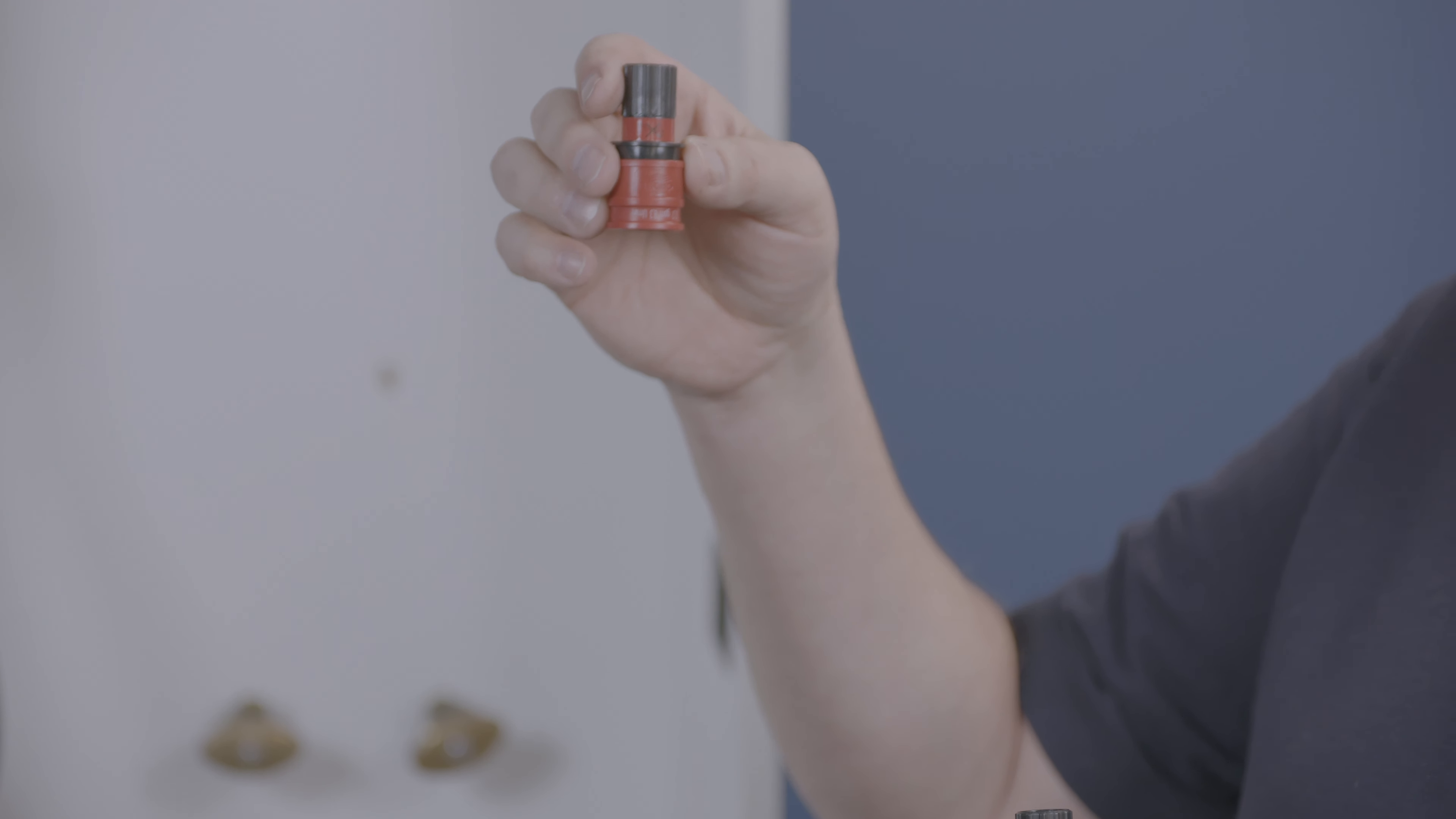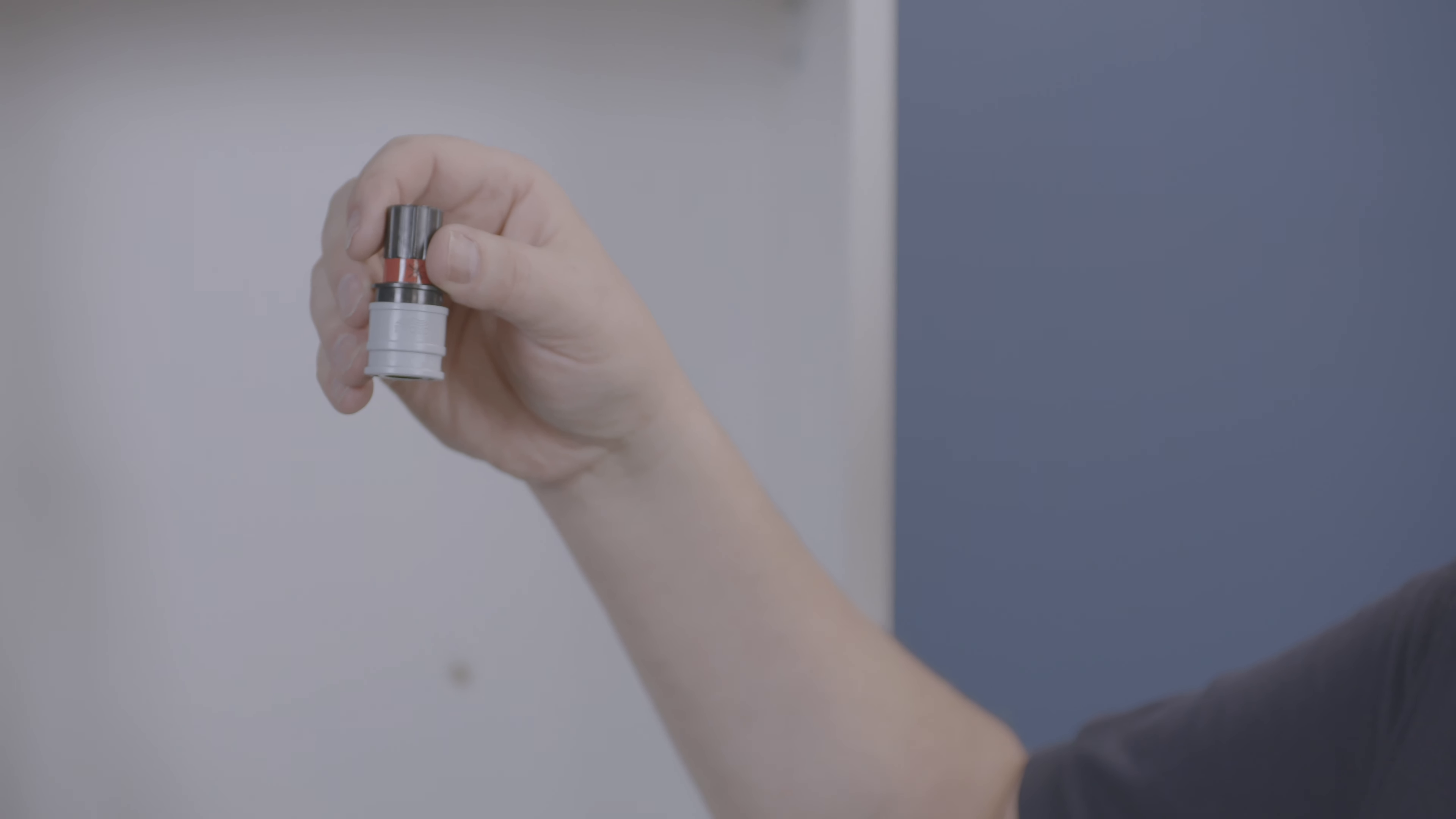The red has a flow restrictor in it, and that is 2.2. The brown is 1.75, and the gray is 1.5.